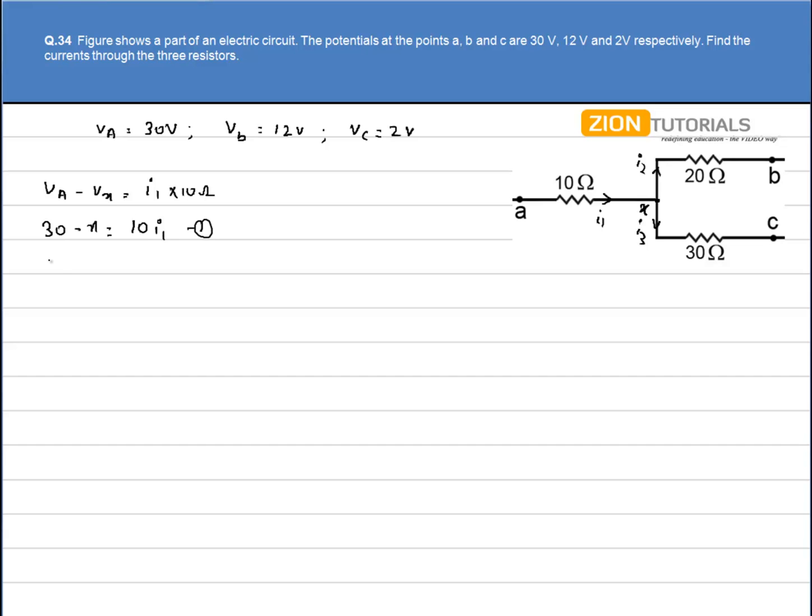The second equation is X minus potential at B equals I2 times 20 ohms. So, X minus VB, that is 12, equals 20I2 is the second equation.